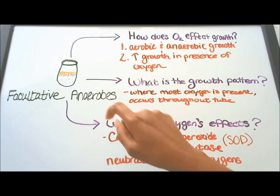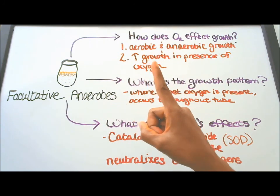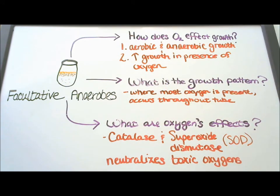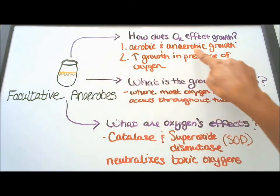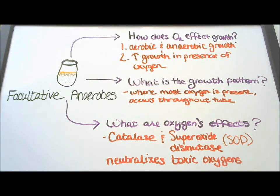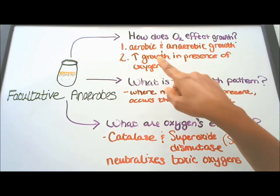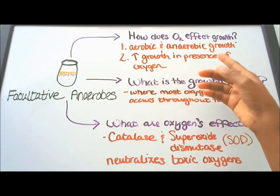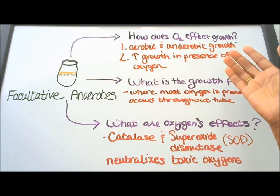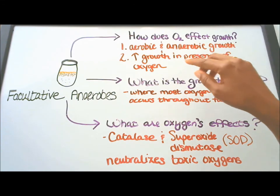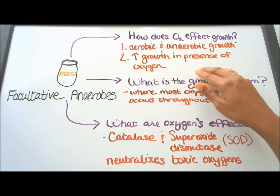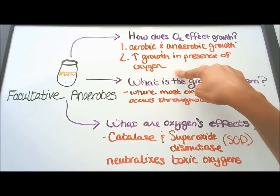Facultative anaerobes. Question number one: how does oxygen affect growth? Well, there's aerobic growth and anaerobic growth. When oxygen is present there is growth. When oxygen is not present there's still growth, but there is greater growth in the presence of oxygen.